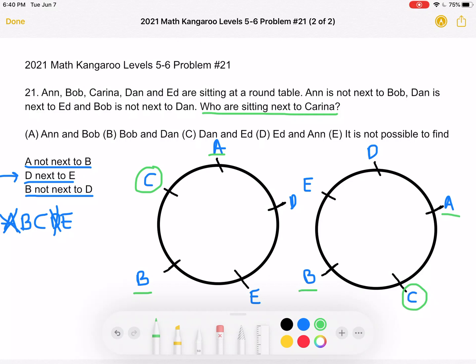In this first image, we have Anne on the left of Karina and Bob on the right. And then in the second orientation, we have Bob on the left and Anne on the right. But in both, we know that Anne and Bob are the two people sitting next to Karina. And then is answer choice A.